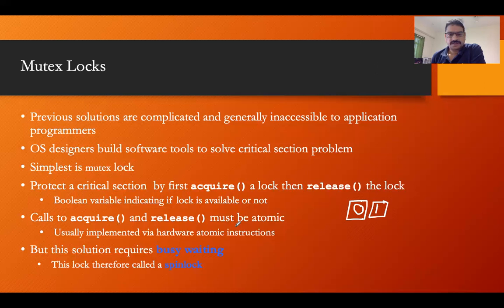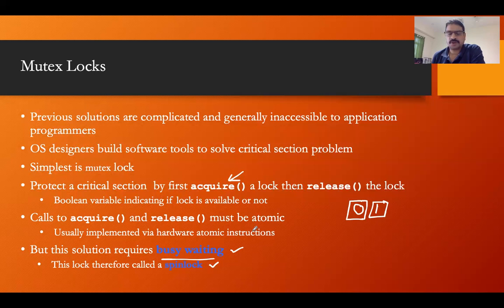The calls to acquire and release must be atomic — that is the key requirement. They are usually implemented by hardware atomic instructions. However, this solution requires busy waiting. This lock is therefore called a spin lock. When we want to use the lock, we call the acquire function which gives us the lock. Once a process gets the lock, other processes cannot enter the critical section and must wait in a loop — that is called busy wait.